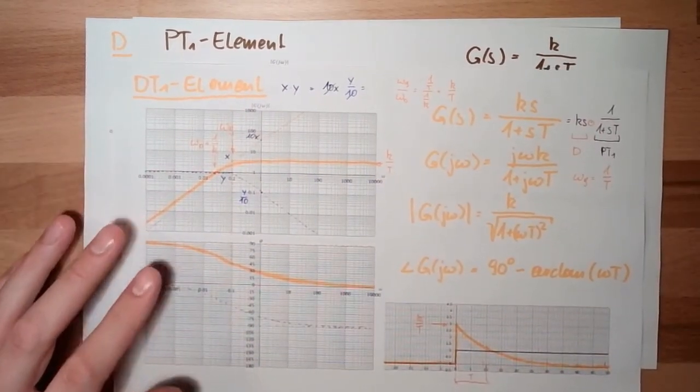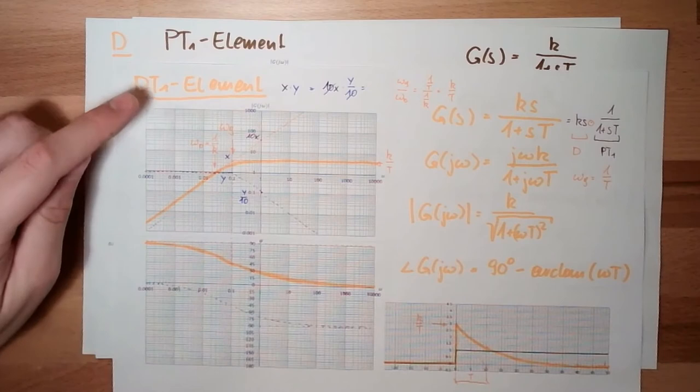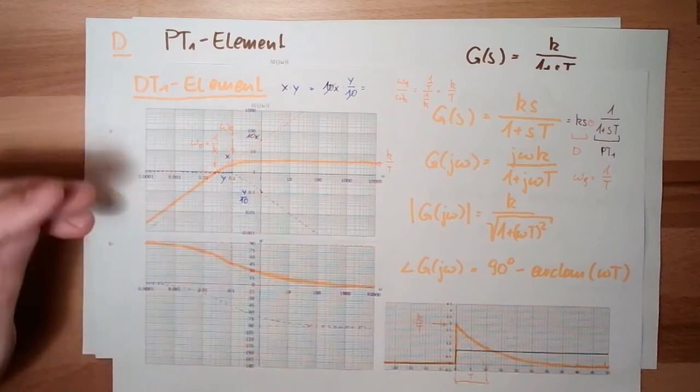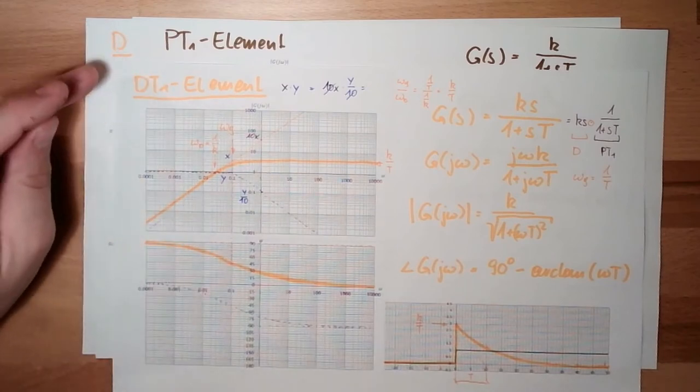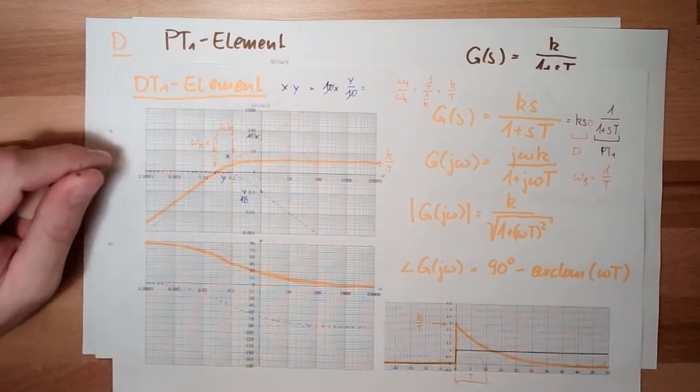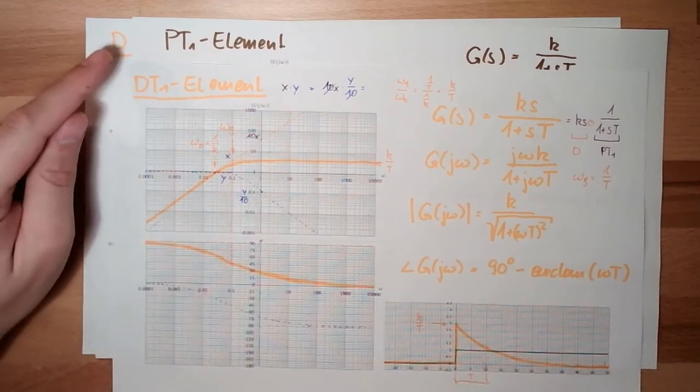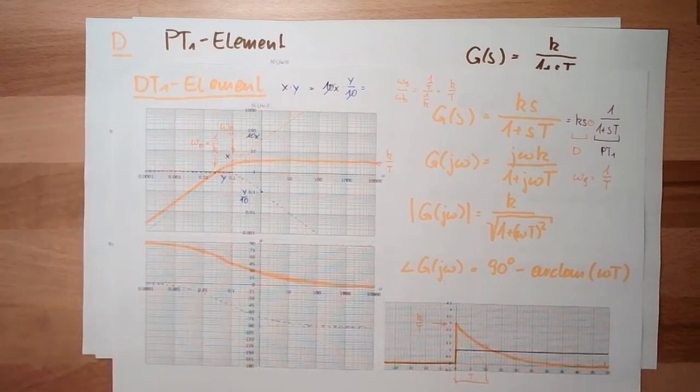The TT1 element — where I said the TT1 element is basically the really existing D element. And this was a combination of the D and PT1 element.